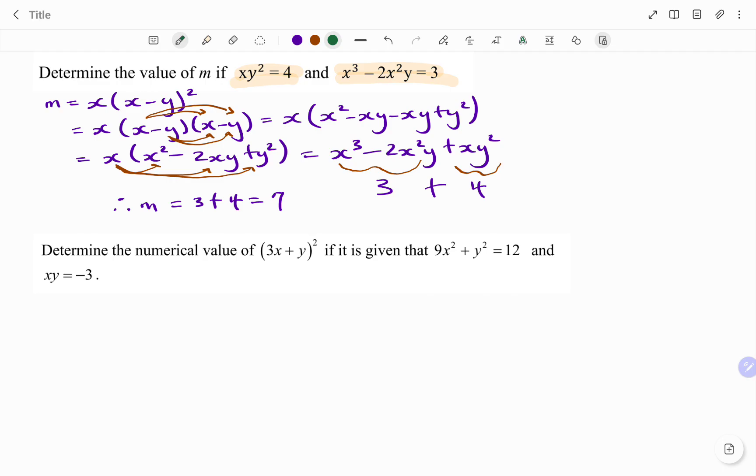I have determined the numerical value of 3x plus y all squared. If it is given that 9x squared plus y squared equals 12 and xy equals negative 3.